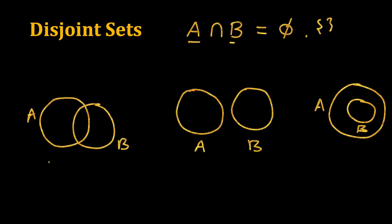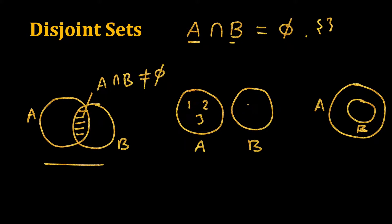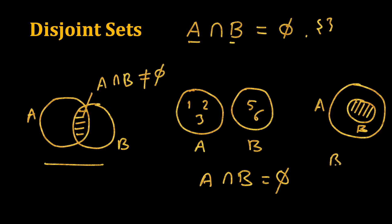In one scenario A intersection B is not the null set — there is some common region. In another, there is no common element: if A has one, two, three then B may have five, six, so A intersection B is the null set. And if B is a subset of A, then A intersection B would be the entire B. Only the case where A intersection B is null is valid, and we call A and B disjoint sets.